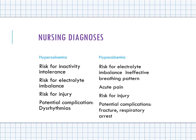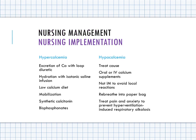Nursing diagnoses for calcium imbalances include risk for actual electrolyte imbalance and risk for injury. For hypercalcemia, risk for injury is due to dysrhythmias. For hypocalcemia, risk for injury is due to tetany — including potential laryngeal spasms that could compromise the airway.